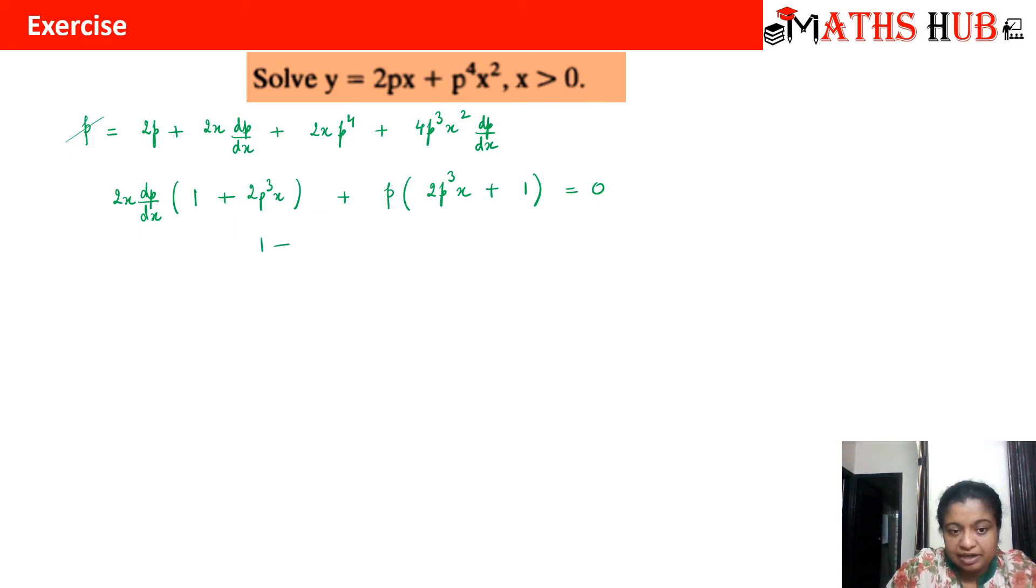When I take the common factors I get 1 plus 2p cube x times 2x dp by dx plus p equals 0. I can see that this term is easy to calculate. So I can substitute 2x dp by dx plus p equals 0.